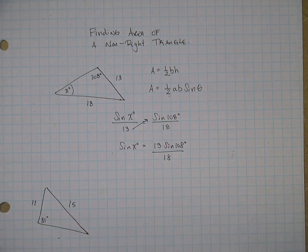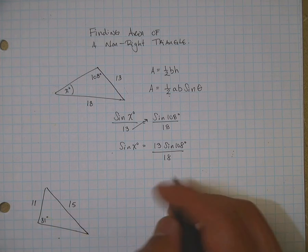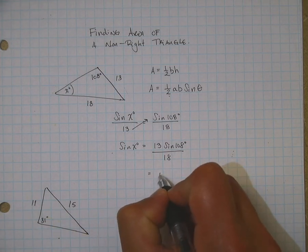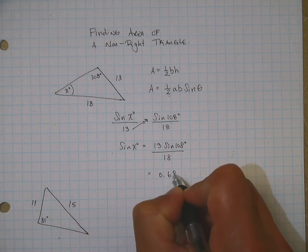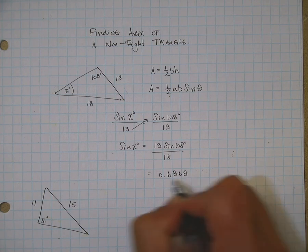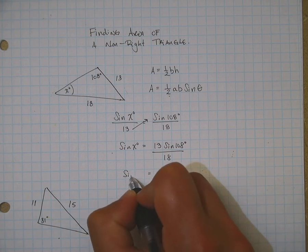So, 13 sine of 108 divided by 18, that's going to give me 0.6868. That's the sine of x.